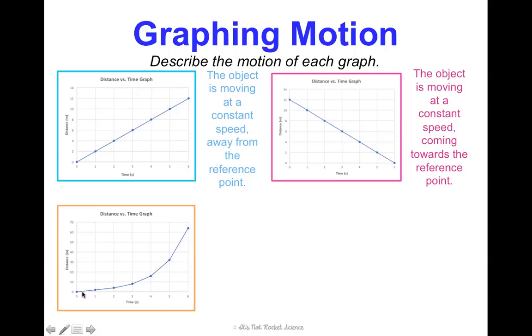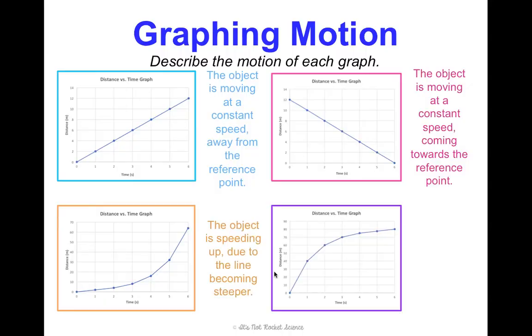Alright, now this graph. This steepness, it starts flatter and it gets more and more and more steep. So, the slope is increasing. And remember, on a distance versus time graph, slope is speed. So, this means if the slope is increasing, the speed is increasing. So, this is showing an object that is speeding up. Whereas, this graph, the line starts steeper and gets flatter and flatter and flatter and flatter. So, this is showing an object that is slowing down.